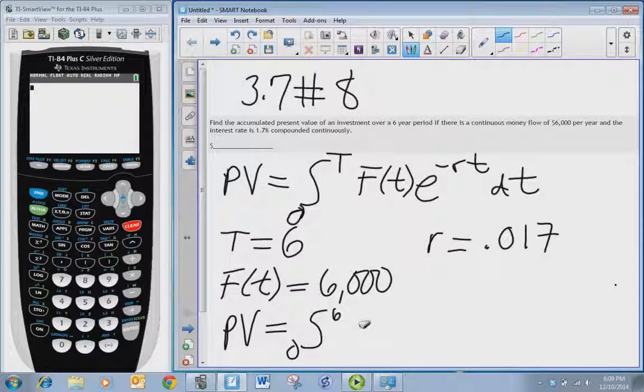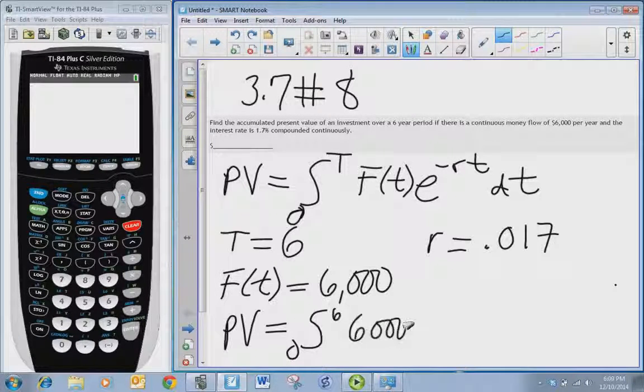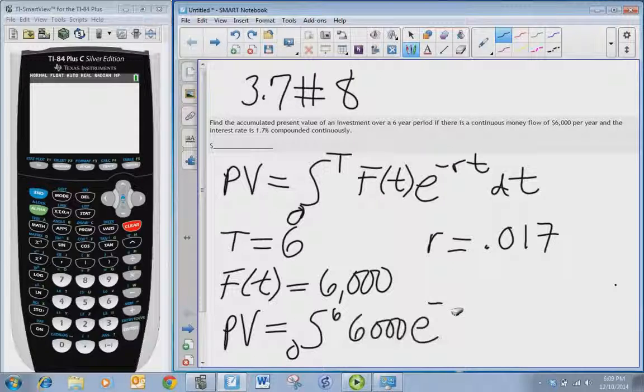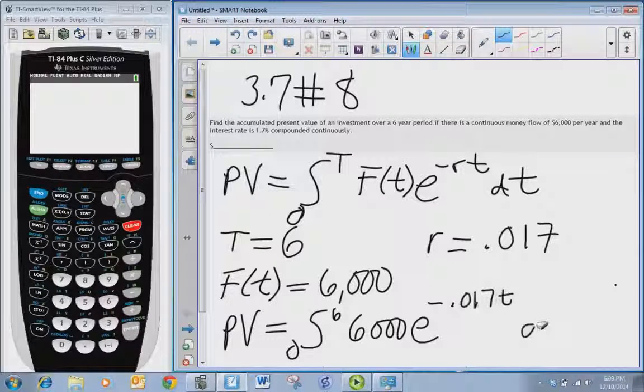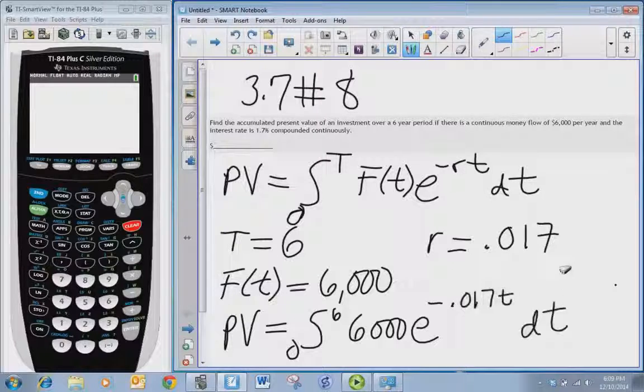All right, now we're ready to plug it in ourselves. So we have the integral from zero to six of six thousand e to the negative point zero one seven t dt.